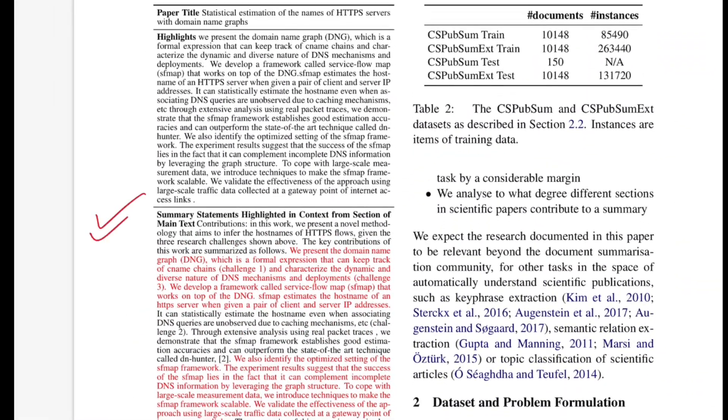Here the authors give an example of what a highlight would mean. If the paper title was statistical estimation of names of HTTP servers with domain name graphs, this is the full highlight from the original authors which they're treating as ground truth. The sentences in these highlights are sentences extracted from the original text, which they've marked with red color.